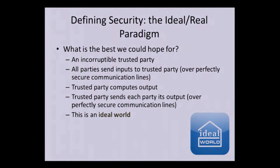We want to actually define security — not by looking at a list of different properties — but by thinking of what's the best we could actually hope for. The best we could hope for is if there was just one person we could all trust: an incorruptible trusted party, with magic ideal channels between each party and that trusted party. Then everyone could just send their inputs to the trusted party, who could compute the function and return the output, giving us all of the properties we wanted.